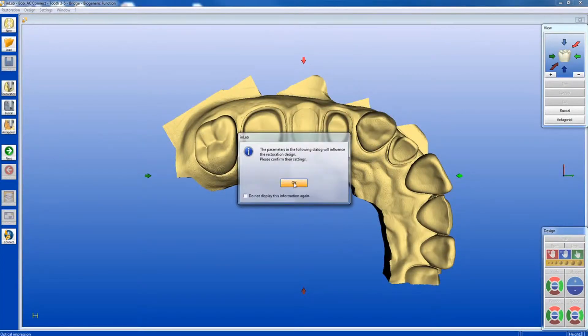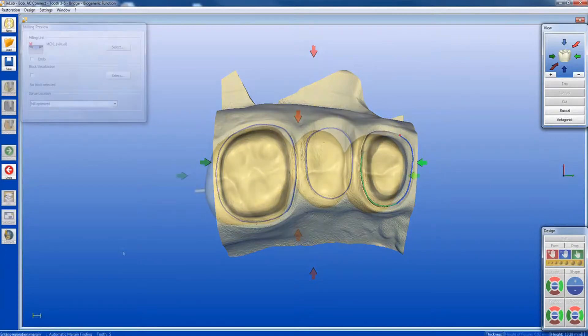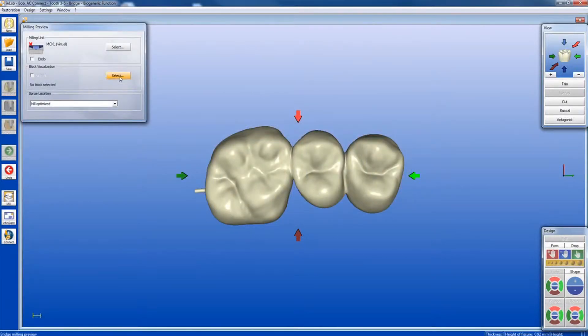Make any changes to your parameters at this time. Mark margins with the automatic margin finder. With your design complete, proceed to the milling preview.